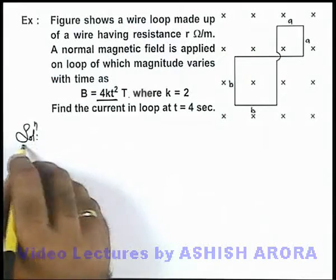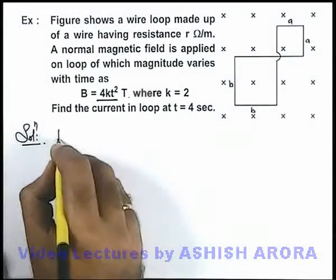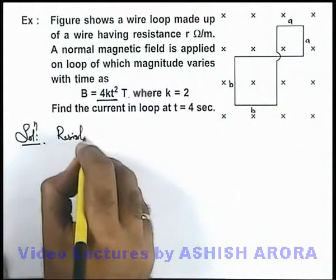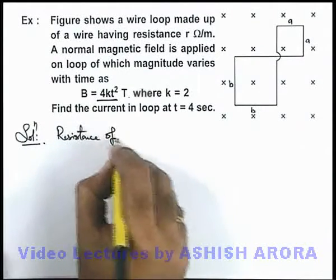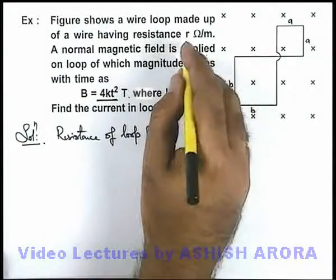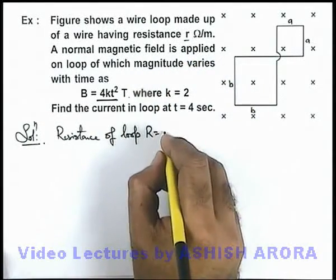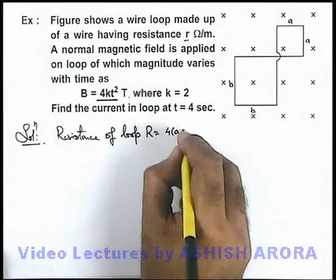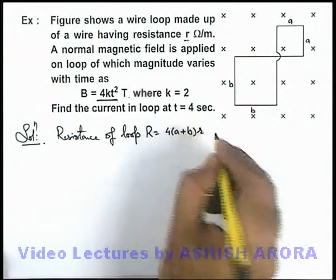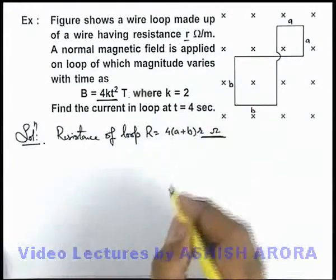Now in this situation, we can directly state that the total resistance of this loop, if we calculate, resistance of loop can be given as R total = n × r. So here, total n can be written as 4(a + b) multiplied by r. This will be the total resistance of the loop.